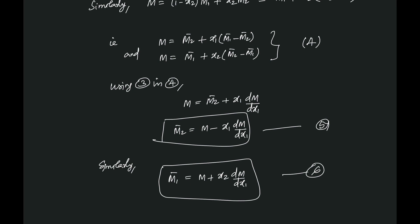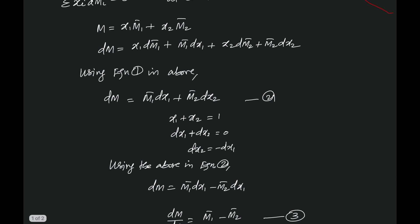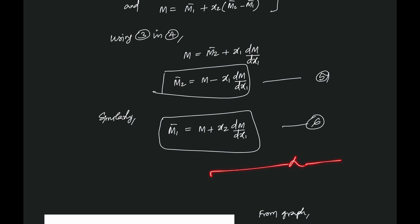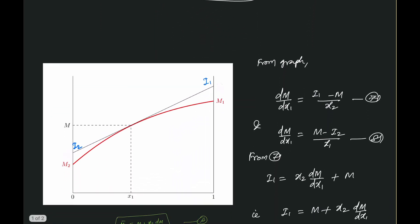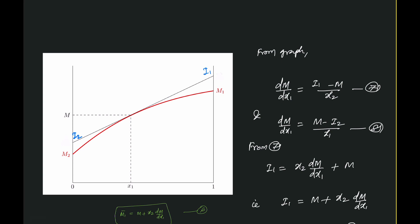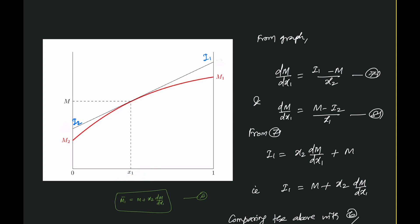Obtaining these equations required a lengthy derivation. Instead, we can use a graphical representation to obtain these equations in a simple way. We make the graph of m versus x₁ — this red color line. At a composition x₁, the molar property of the solution is m. At this point, we make a tangent to the curve, which gives the slope dm/dx₁ at that composition.